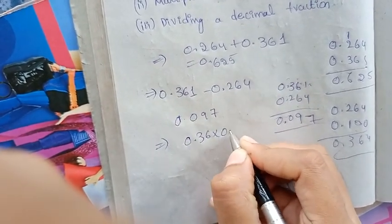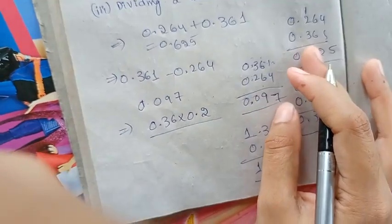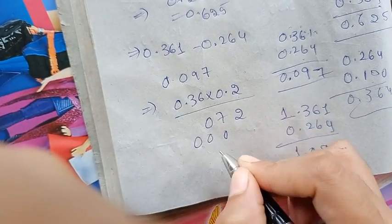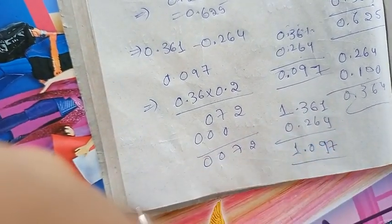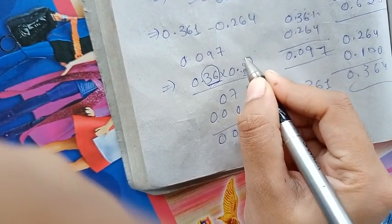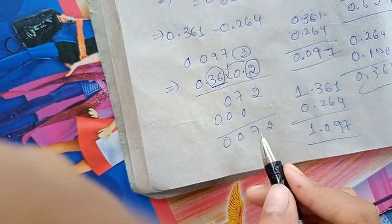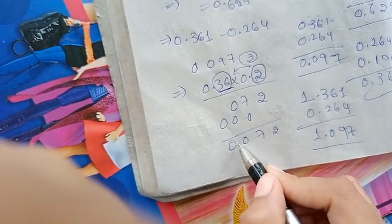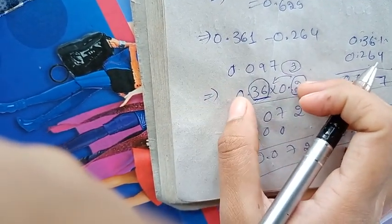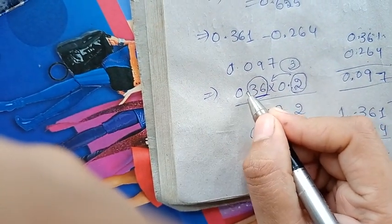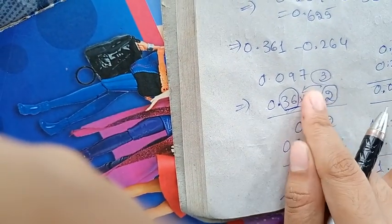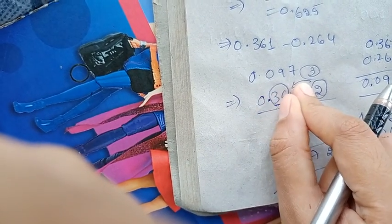0.36 multiplied by 0.2 — in this way we will do a multiplication. That means 2, 6, 0, 12, 1, 6, 7, 2, 0, 0. So 2, 7, 0, 0. We will put the point here. After the point, count the values: two values here and one value here — two plus one equals three values from the left side. Then we place the point at three decimal places. So the multiplication result is placed accordingly.